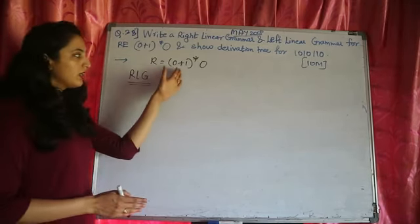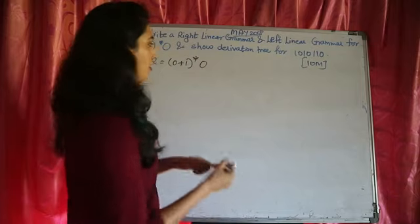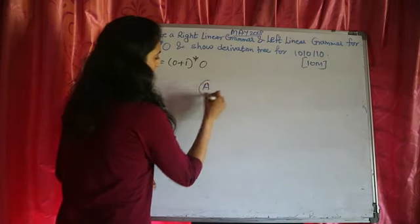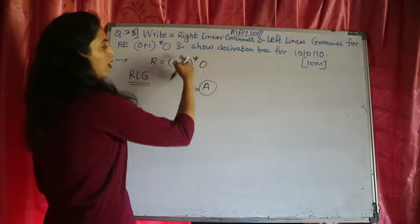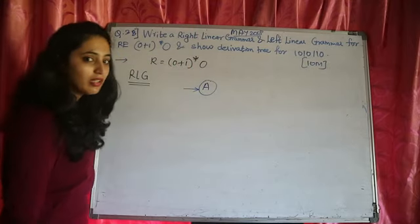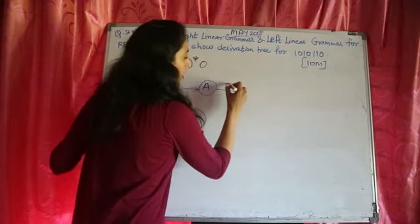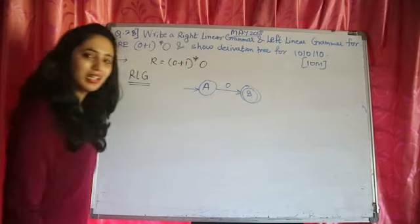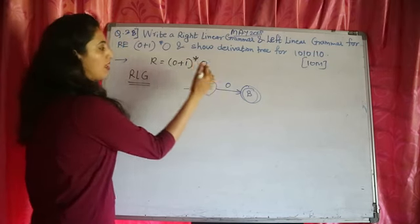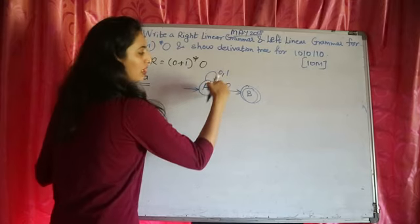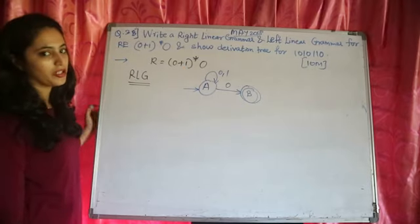Now we want to generate the right linear grammar for this regular expression. First, we will draw the DFA diagram. We can say there is a state A. On 0 and 1, it can have many combinations of 0 and 1, and then it will end with 0. So it is a string ending with 0. When 0 comes, it goes to the final state; before that, 0 and 1 can have any combination. This is the DFA for this regular expression — really very easy.